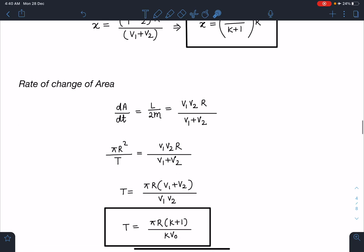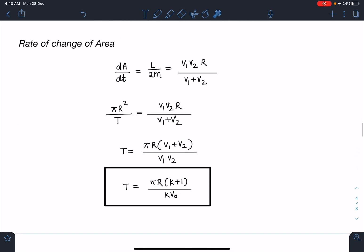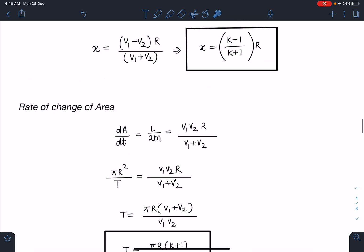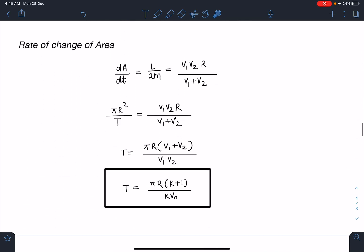Now rate of change of area: In these central forces, the rate of change of area will be constant because angular momentum is constant. So dA/dt, the rate of change of area, I can write as L/(2m). This L/(2m) value I can substitute from here, it is going to be v₁·v₂·r/(v₁ plus v₂). Since it is a constant, I can simply write it as total area πr² divided by time taken. When I simplify this, I am going to get the time of one complete rotation as T equals πr(k plus 1)/(k·v₀). This is the answer for the third part.